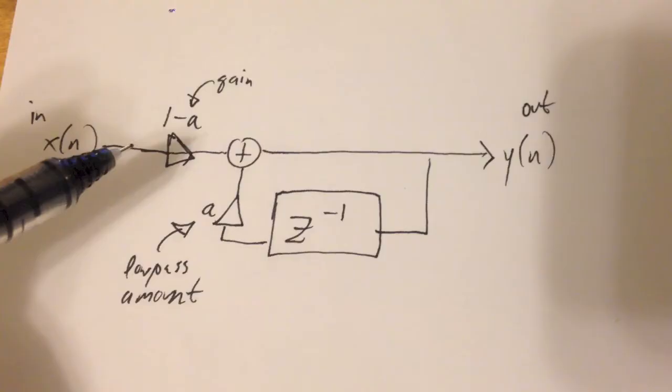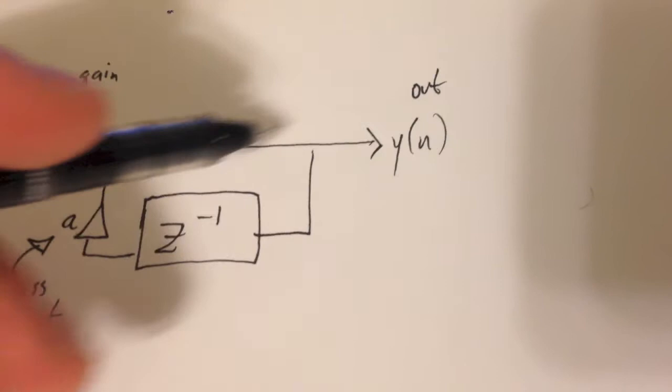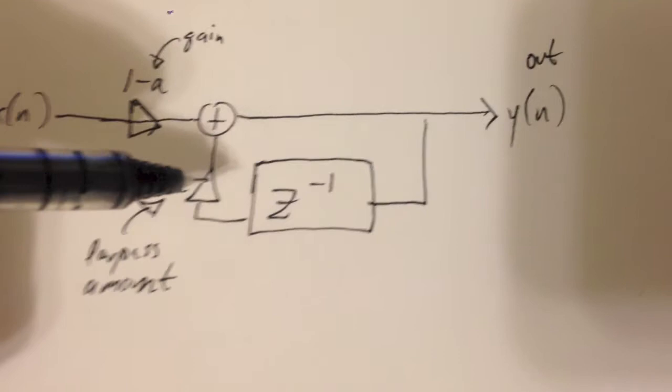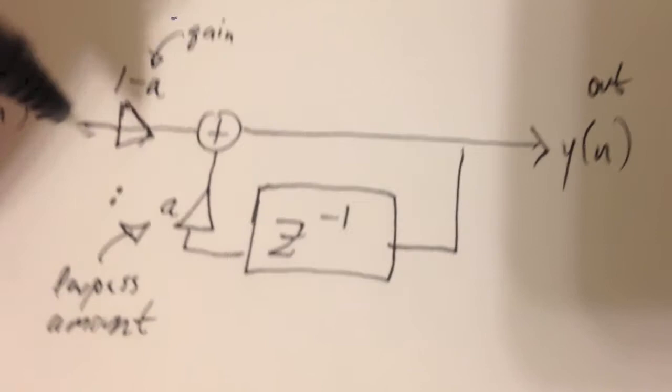Okay, so this is a diagram of a one-pole low-pass filter. You can see that the signal goes in here, goes down this way. This is a one-sample delay. You'll multiply it by some amount that determines the low-pass from zero to one. So let's say this is 0.75. Then one minus a might be 0.25 because they have to add to one.